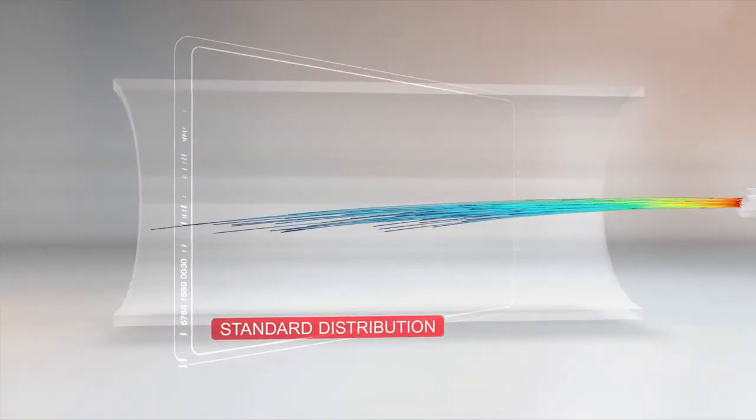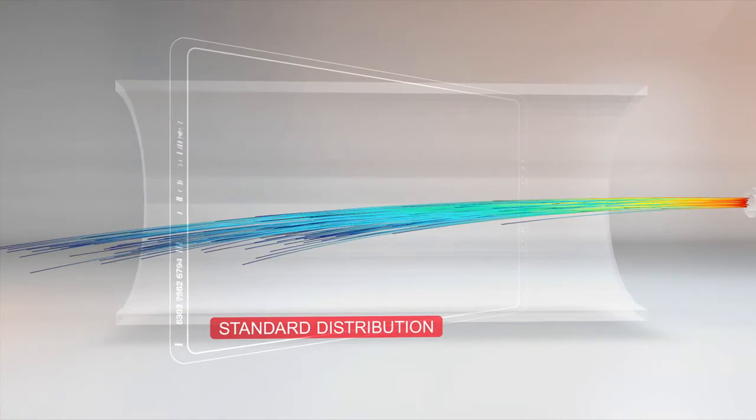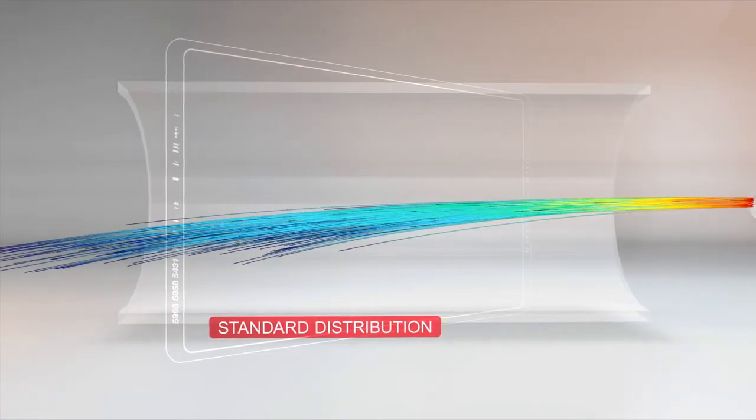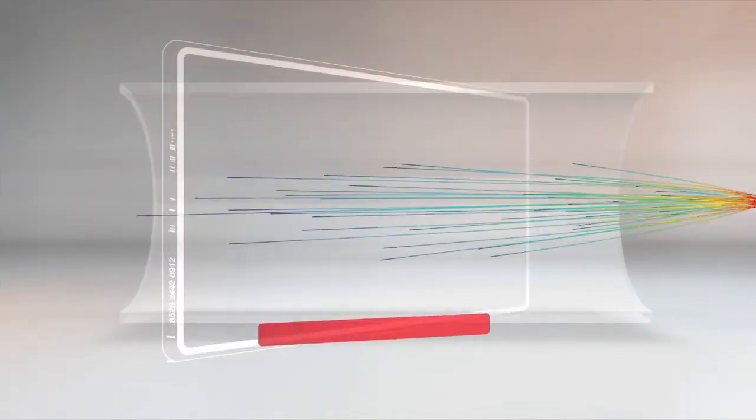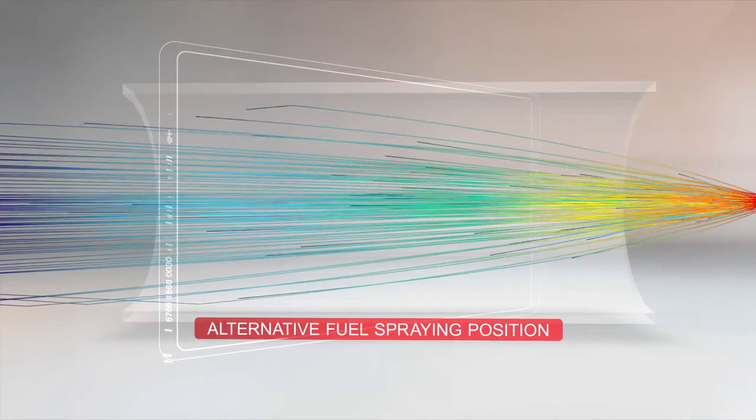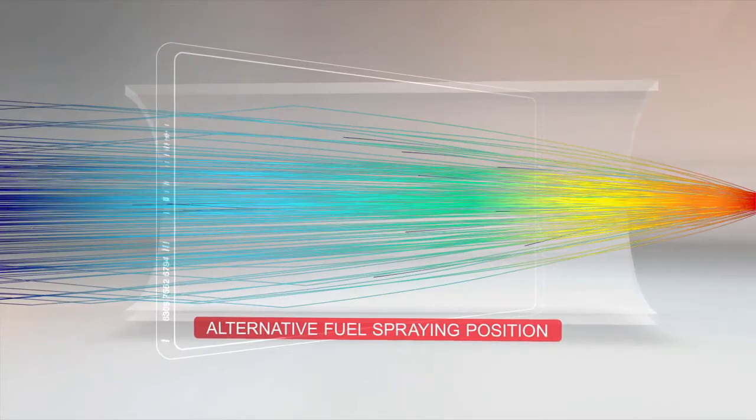Due to the adjustable swirl system, alternative fuels are better distributed in the flame core. The spraying position of the swirl element ensures an efficient distribution, and therefore complete combustion of the fuel particles.